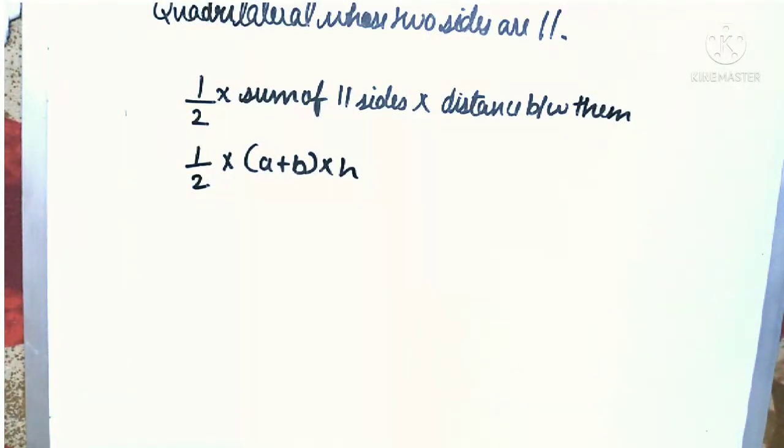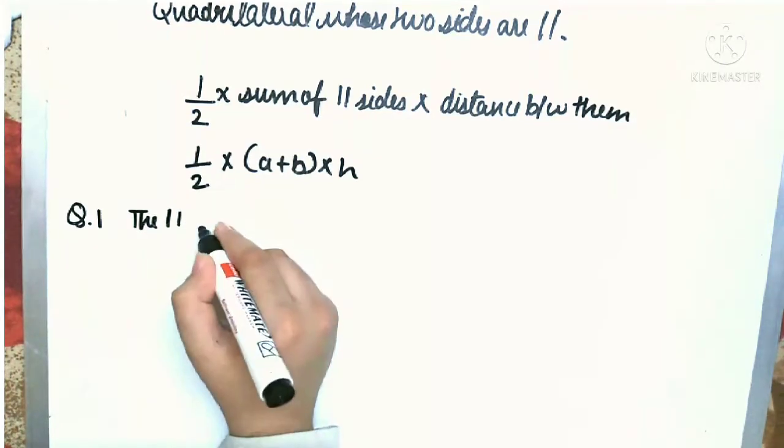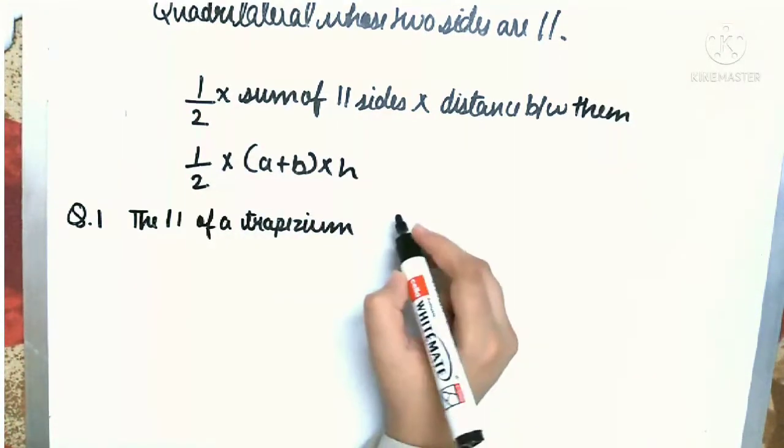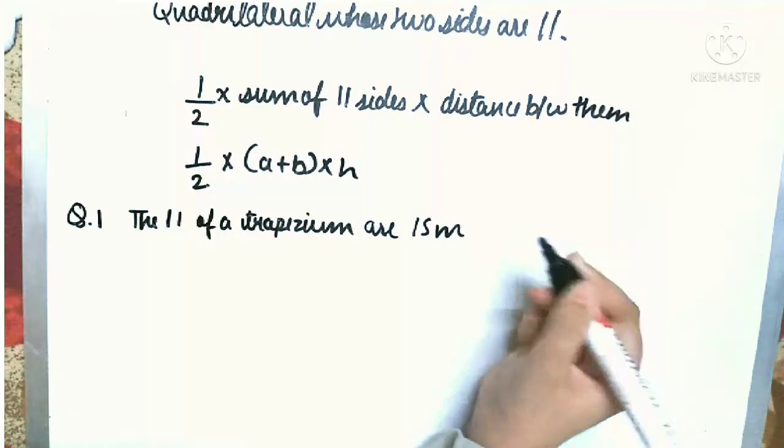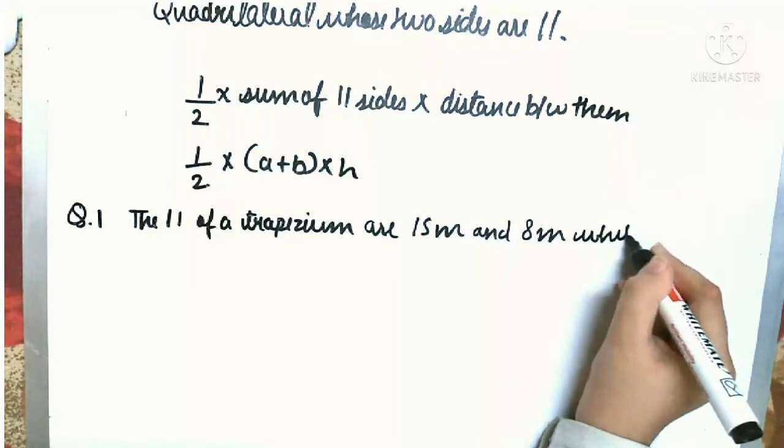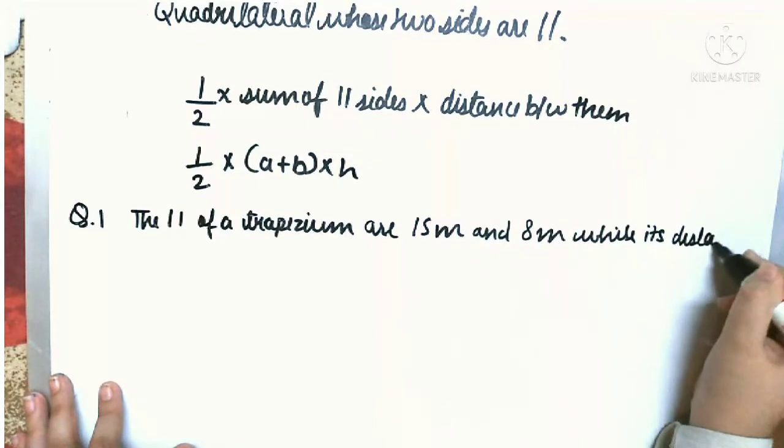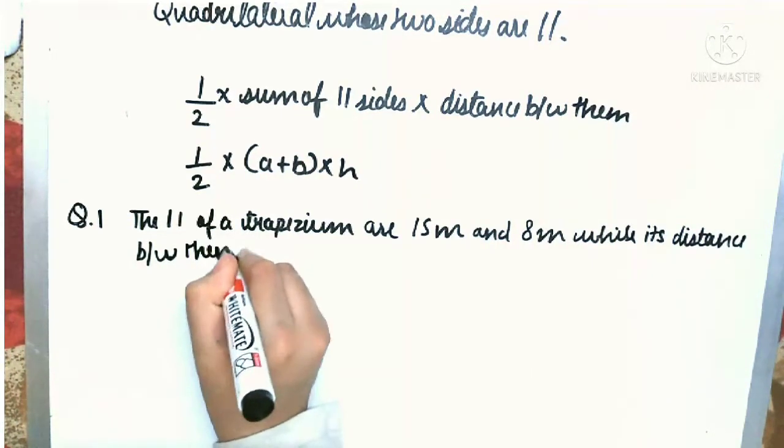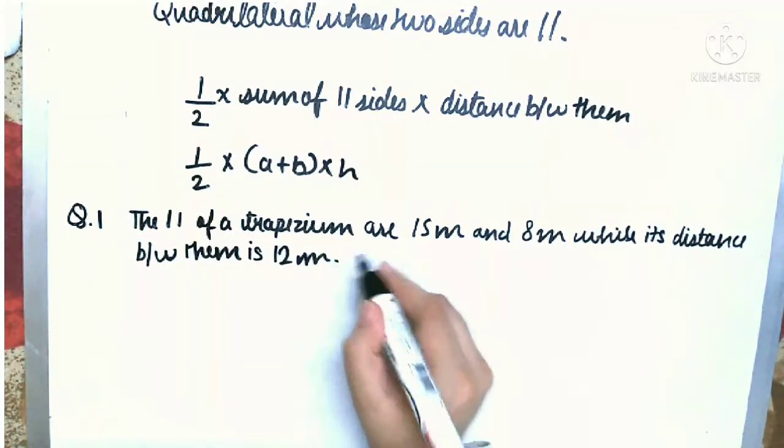So for better clarity, let's move on to a question. The question is: The parallel sides of a trapezium are 15 meter and 8 meter, while the distance between them is 12 meter. Find the area.